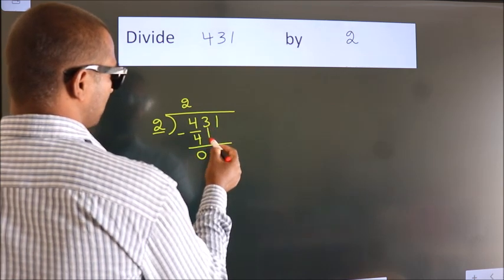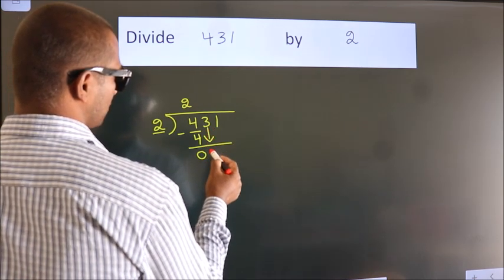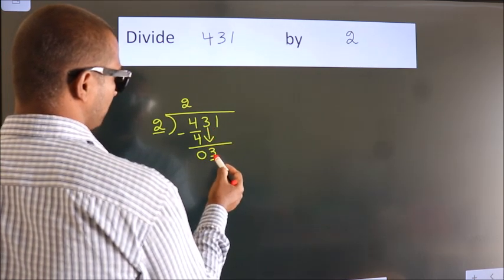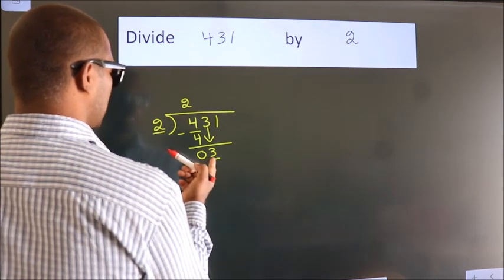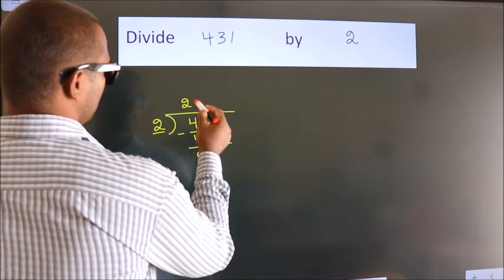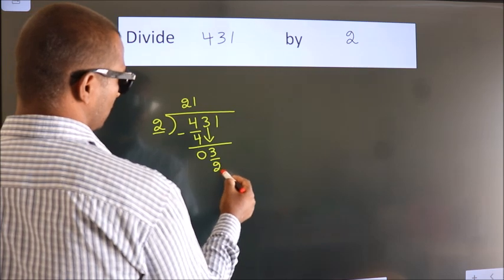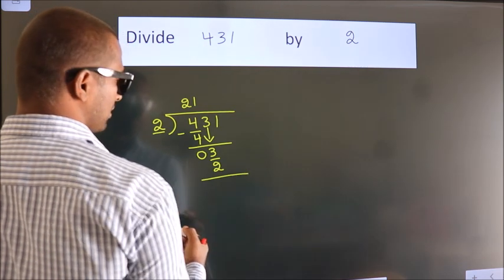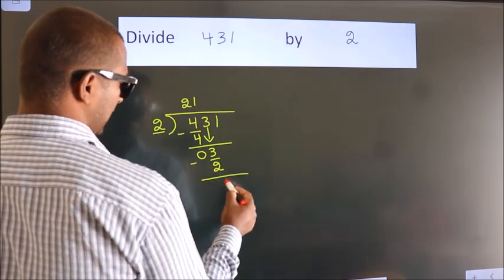After this, bring down the beside number. So, 3 down. So, 3. A number close to 3. In 2 table is 2 1s, 2. Now, we subtract. We get 1.